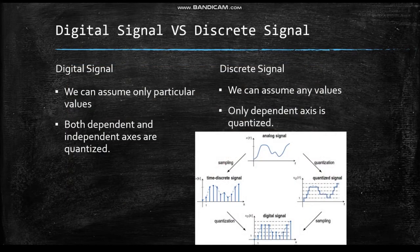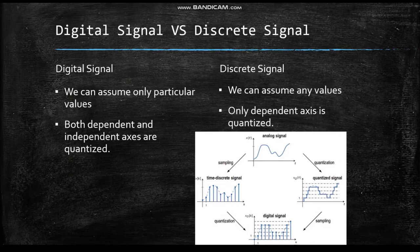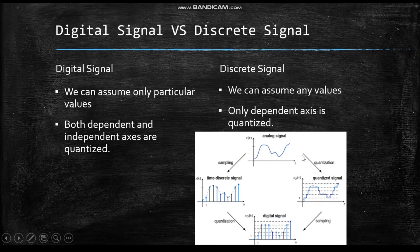A digital signal is different from a discrete signal in that digital signals can assume only particular values like 1s and 0s, while a discrete signal can assume any value. In a digital signal, both the dependent and independent axes are quantized, whereas in a discrete signal only the independent axis is quantized. An analog signal can be converted to a discrete time signal through sampling, and then further converted to a digital signal through quantization. Alternatively, an analog signal can first be quantized and then sampled to produce a digital signal.